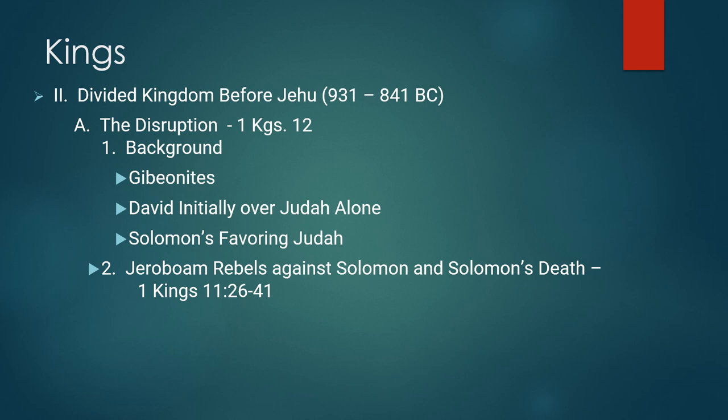Number two on your sheet is Jeroboam rebels against Solomon — 1 Kings chapter 11, verses 26 to 41. Jeroboam, often termed Jeroboam son of Nebat or Jeroboam the First, was an official of Solomon's court put in charge of the labor force of Ephraim and Manasseh — the house of Joseph. He was himself from the tribe of Ephraim, as verse 26 notes: he was one of Solomon's officials and an Ephraimite.